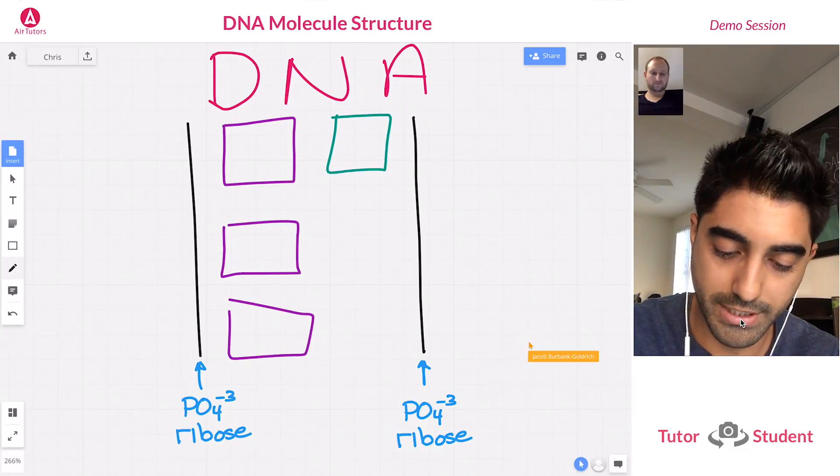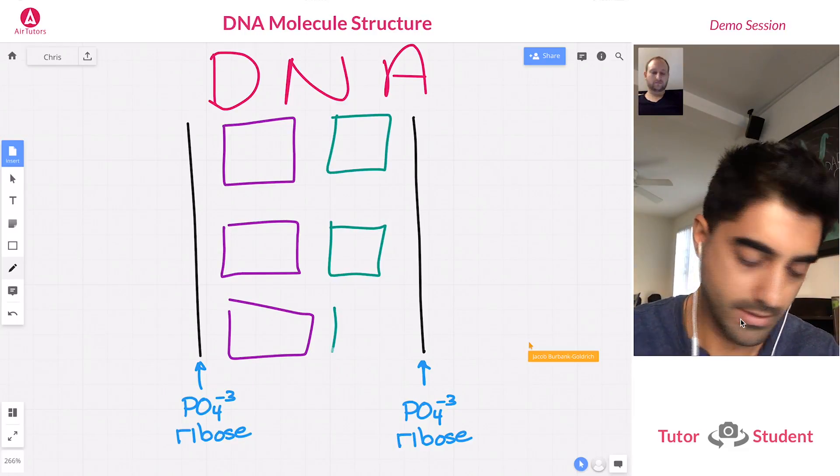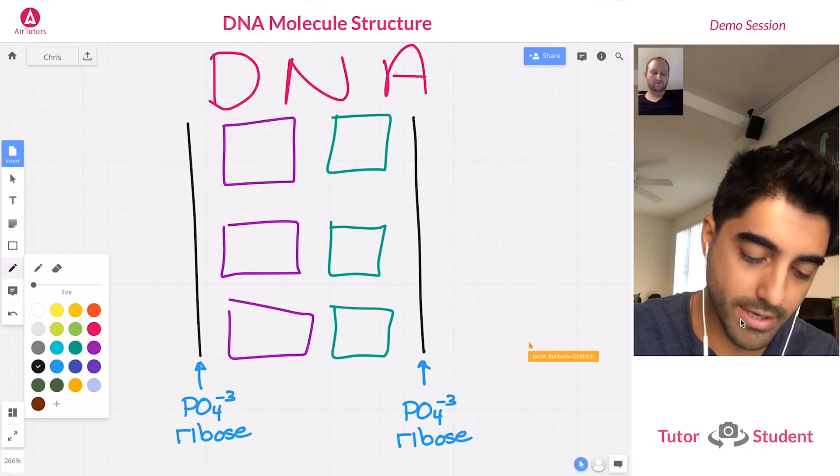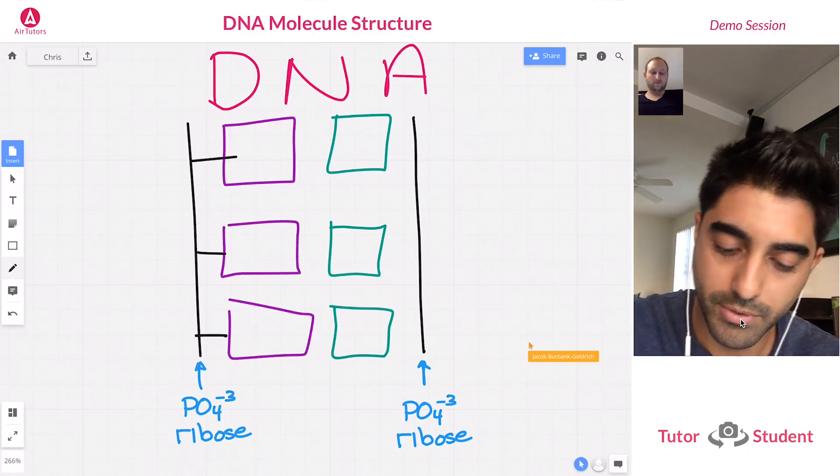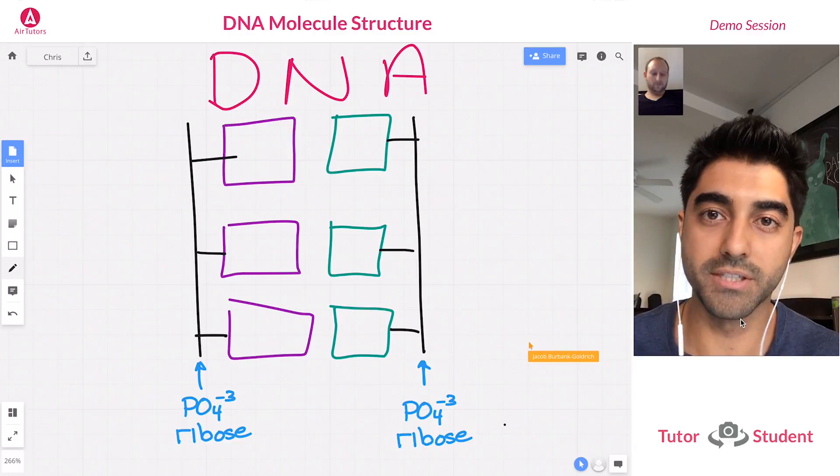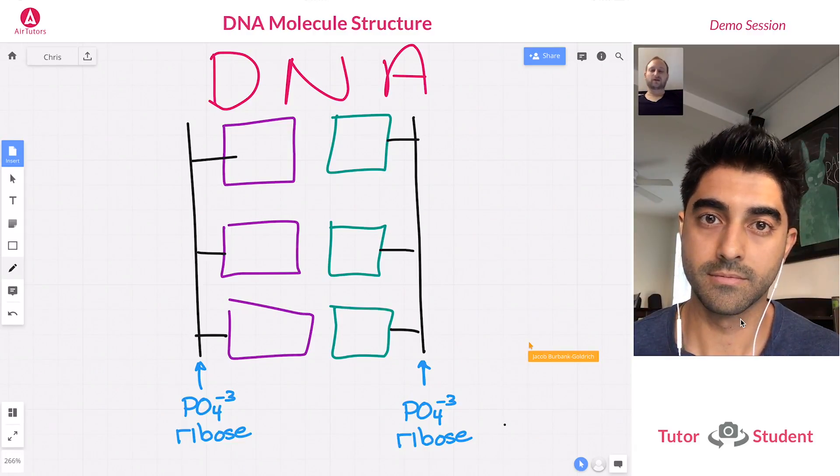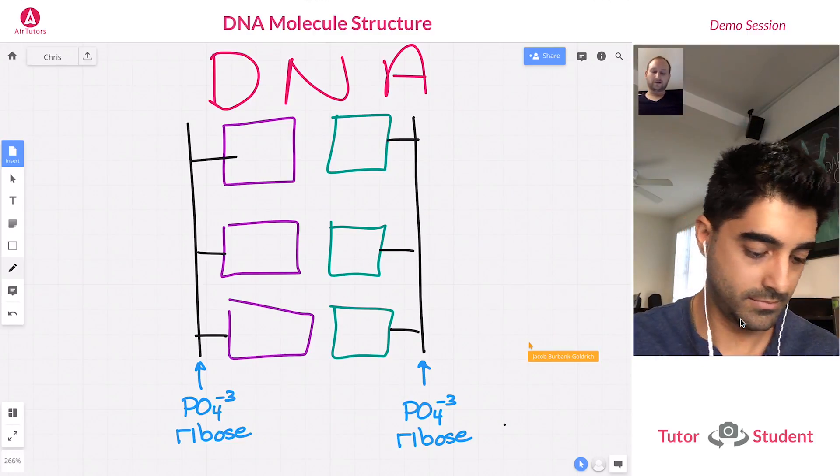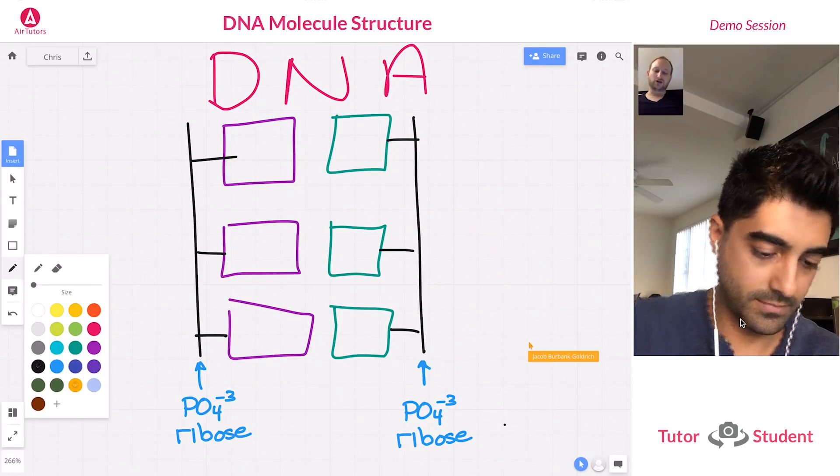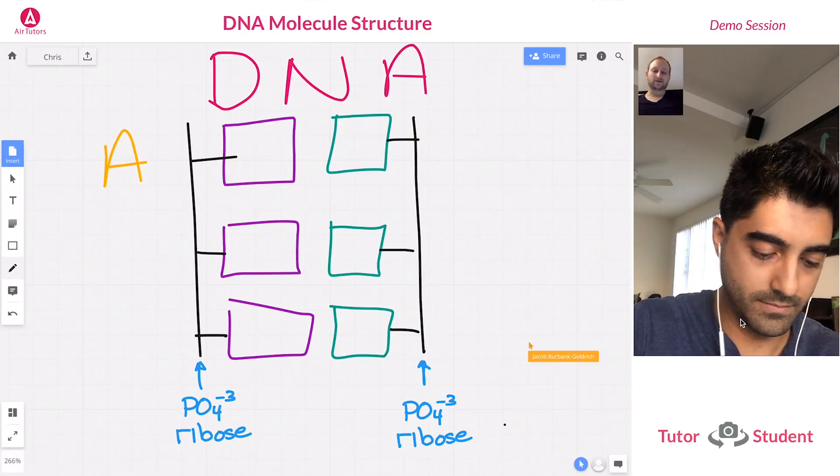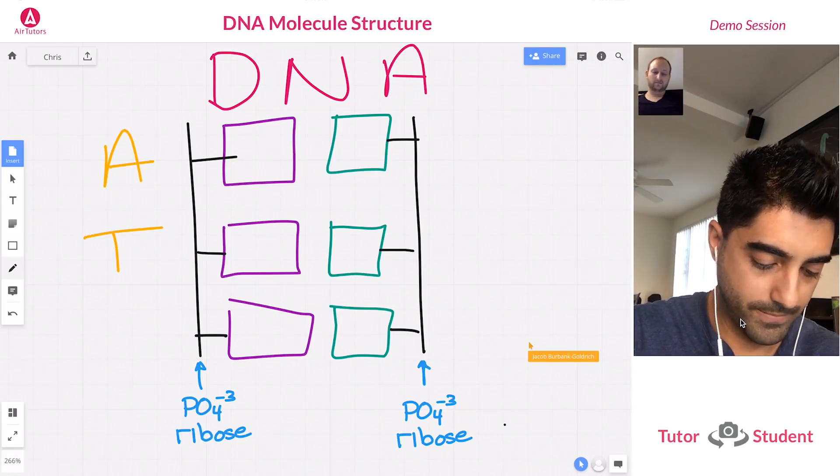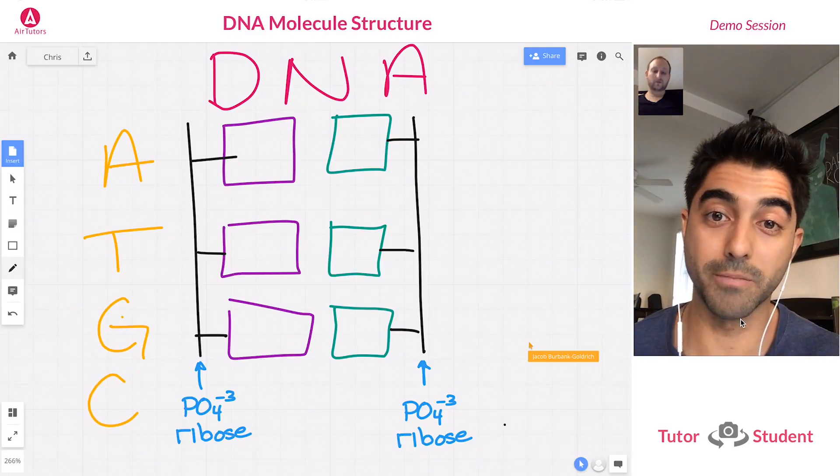Okay, what are our four DNA nitrogenous bases? So I remember, A is adenine, T is thiamine, G is guanine, and C is cytosine. Guanine and cytosine, awesome, good job.